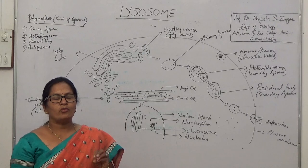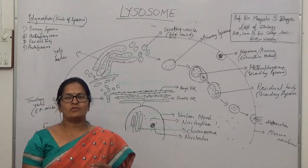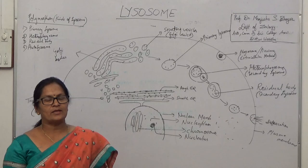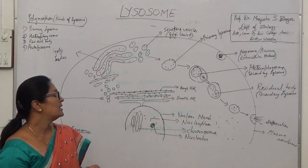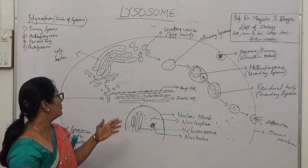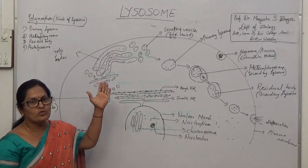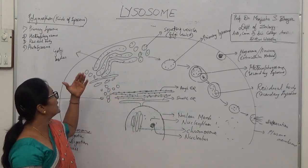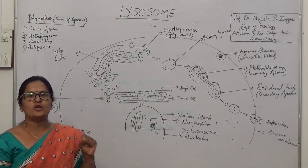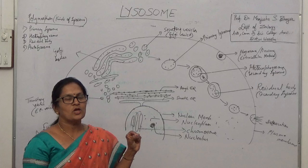So, this Lysosome, how are the Lysosomes originated? Some of the scientists say that it is originated from plasma membrane. Some of the scientists say that it is originated from nuclear membrane. Some say that it is originated from ER and some say that it is originated from Golgi complex. But the main origin of the Lysosome is from the Golgi complex.